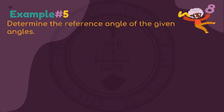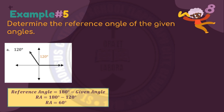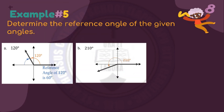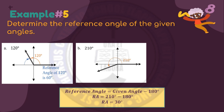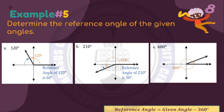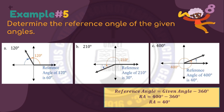Example 5: determine the reference angle of the following angles. Letter A, 120 degrees: reference angle equals 180° minus 120° equals 60 degrees. Letter B, 210 degrees: reference angle equals 210° minus 180° equals 30 degrees. Lastly, 400 degrees: reference angle equals the given angle minus 360°, so 400° minus 360° equals 40 degrees.